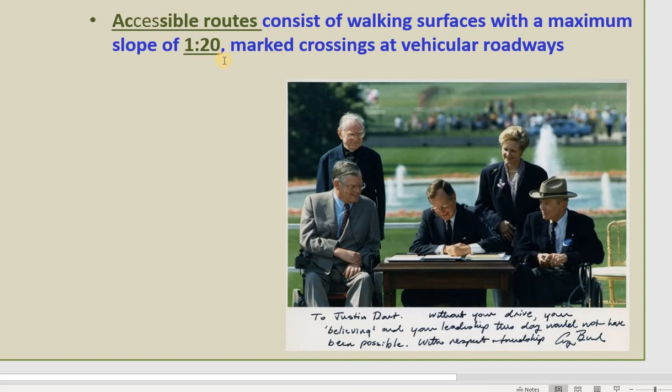After that you connect two points. That is the maximum they allow for the walking surface with a slope. 1:20 is the maximum — you cannot go higher. That rule applies to the walking surface.